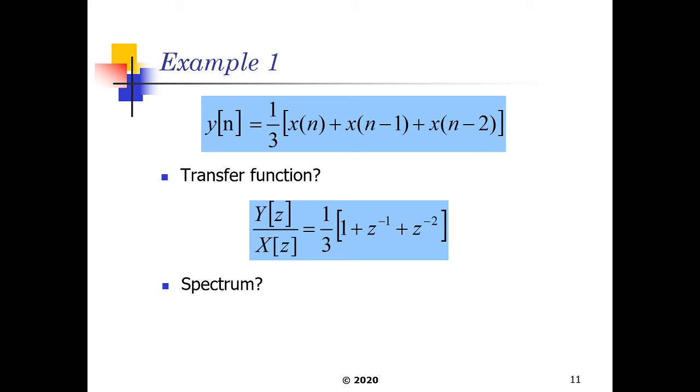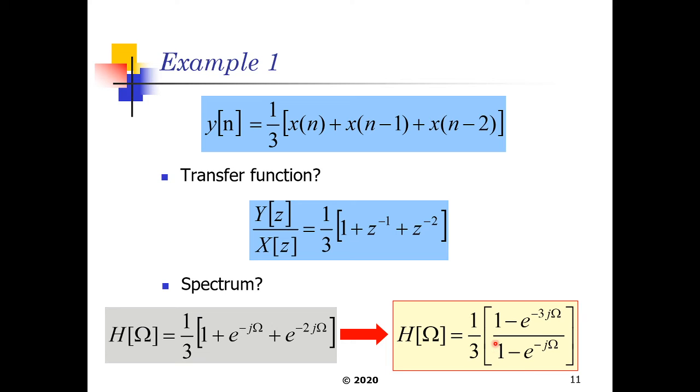The spectrum of this, if we convert this to h omega, because remember h is basically y over x, is that all these z delays here now become e to the minus j omega accordingly. And for this one here, it's going to be e to the minus 2j omega. And if we do some equation manipulation here and we use our geometric progressions, we can get h omega here into this form.